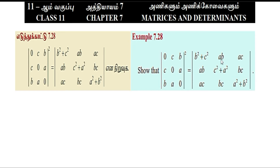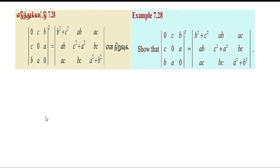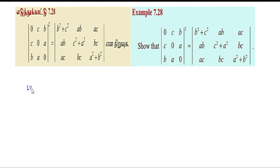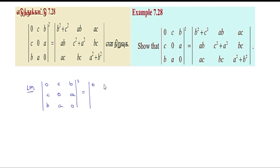So, taking the left hand side of the system: determinant [0, C, B; C, 0, A; B, A, 0] whole square equals determinant [0, C, B; C, 0, A; B, A, 0] multiplied by itself.